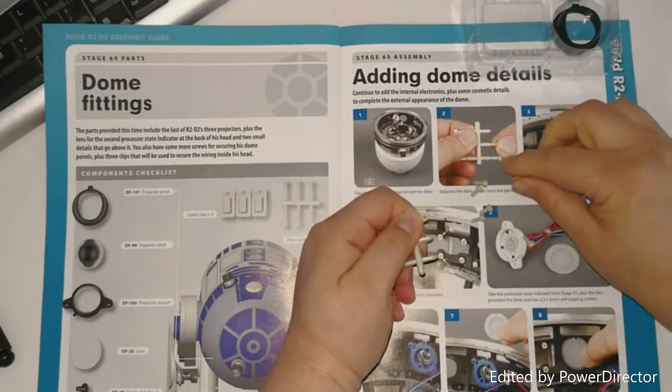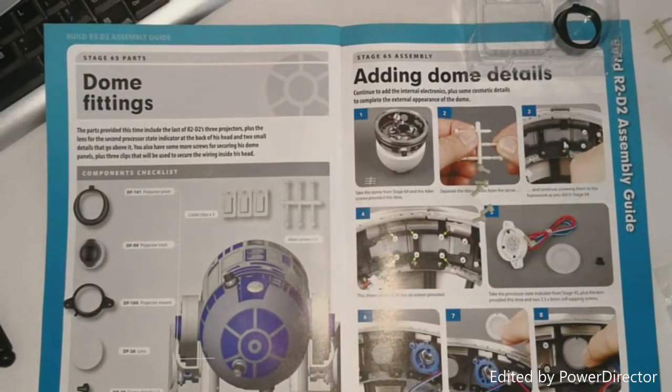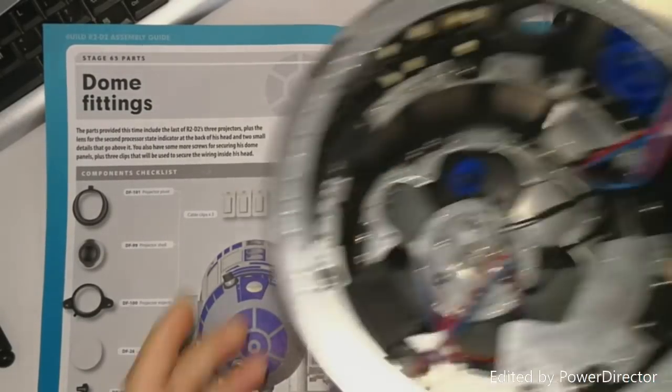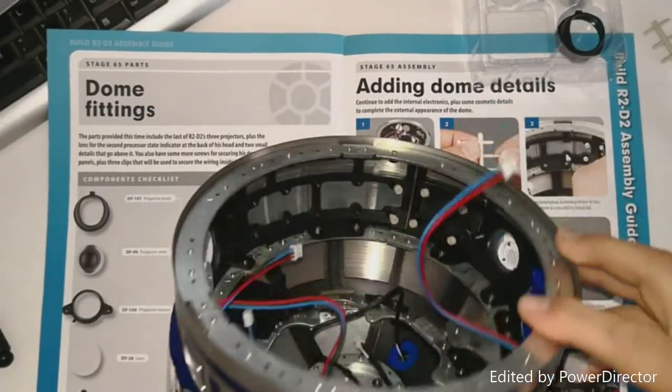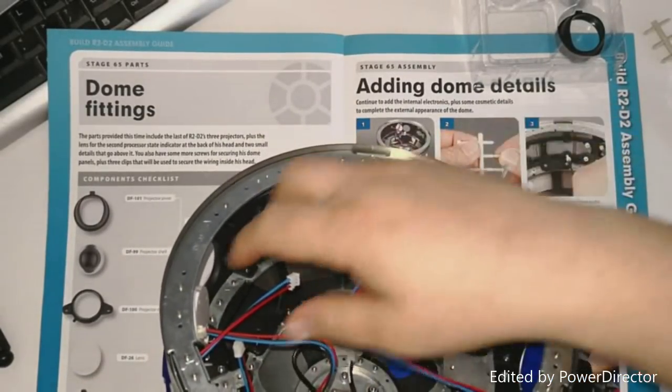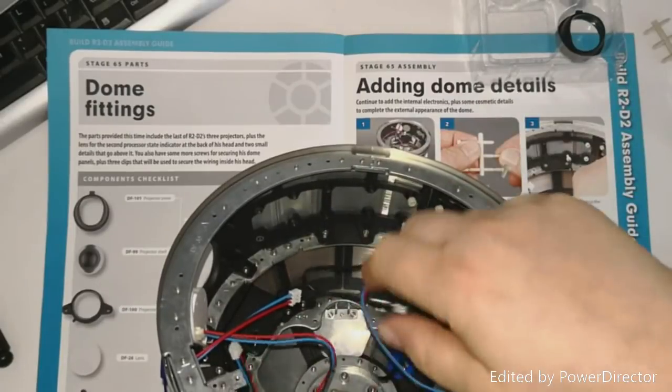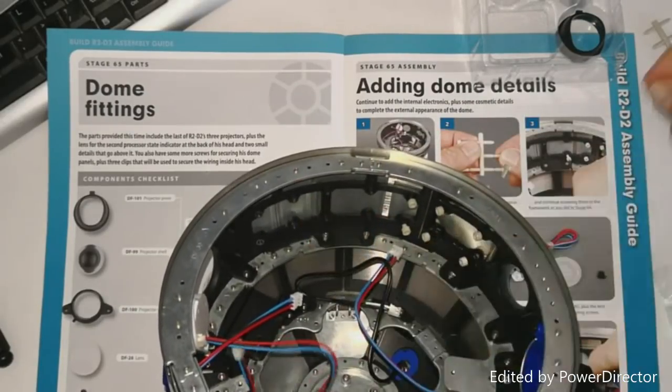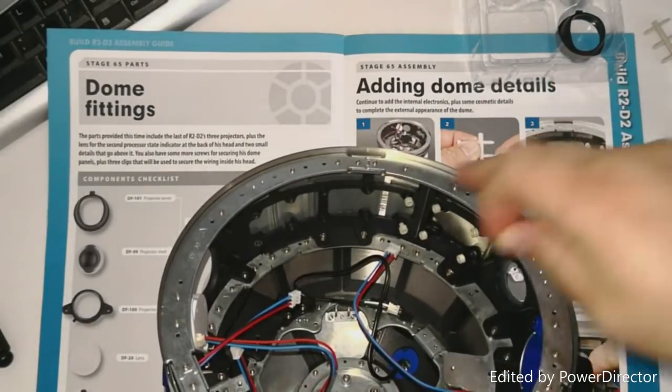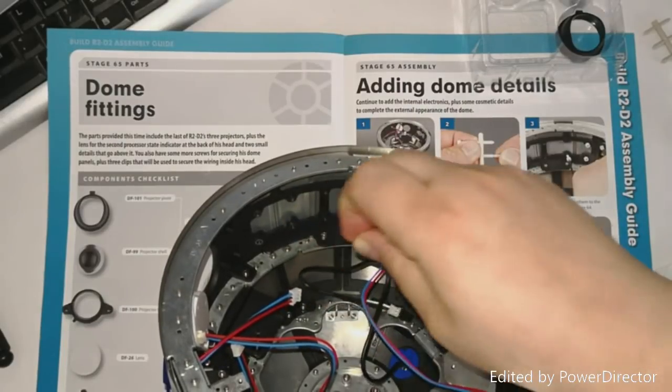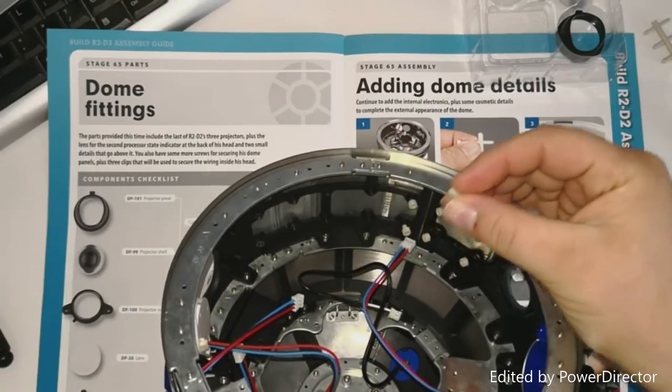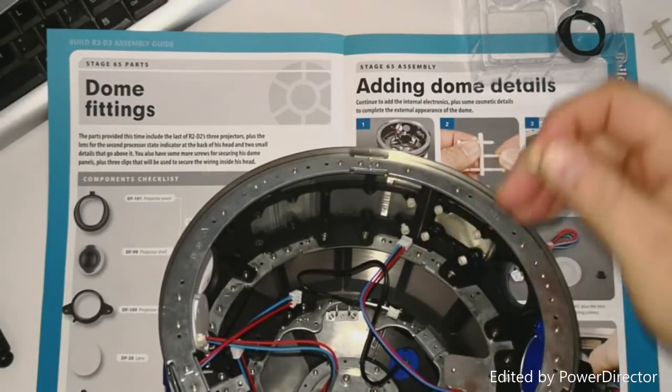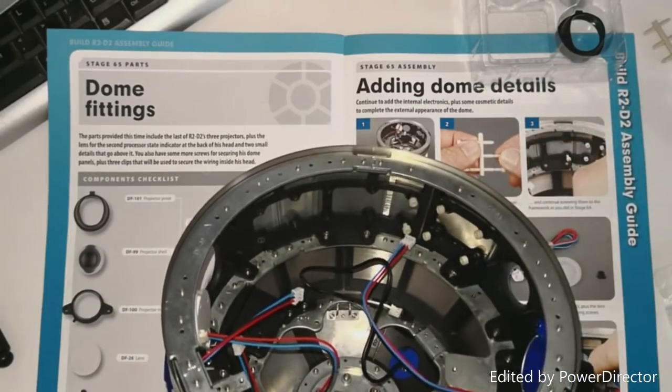There's a little knack to this. So here is our header of R2. I'm trying to push all these wires out of the way. Basically we're just going to follow this line around. I found the best way to do this is to hand screw them in first and then tighten them up with the Allen key. So that's what I'm going to do.